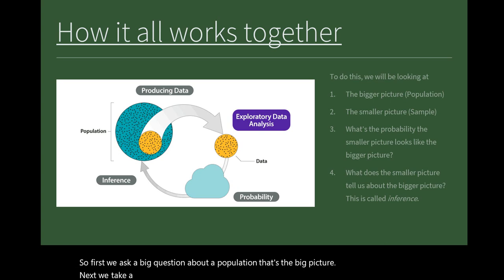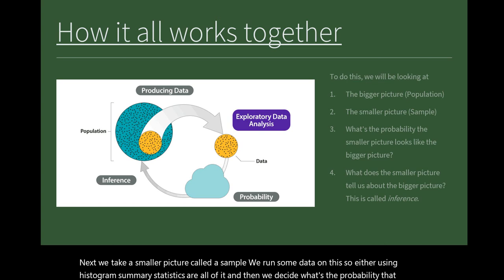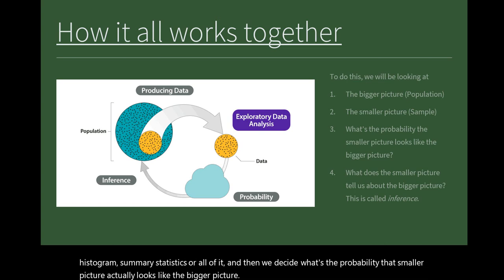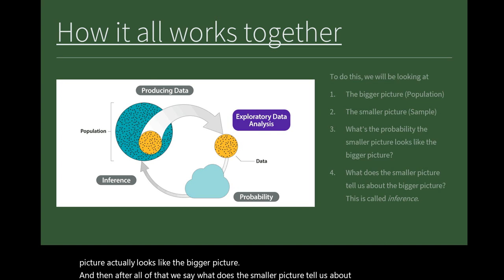We run some data on this, using histograms, summary statistics, or all of it. Then we decide what's the probability that that smaller picture actually looks like the bigger picture? And then after all of that, we say what does this smaller picture tell us about the bigger picture. That's what inference is.